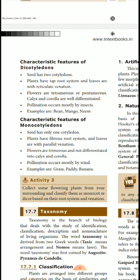Next, the characteristic features of the Monocotyledon: the seed has only one cotyledon. The plant has a fibrous root system, and the leaves have parallel venation.